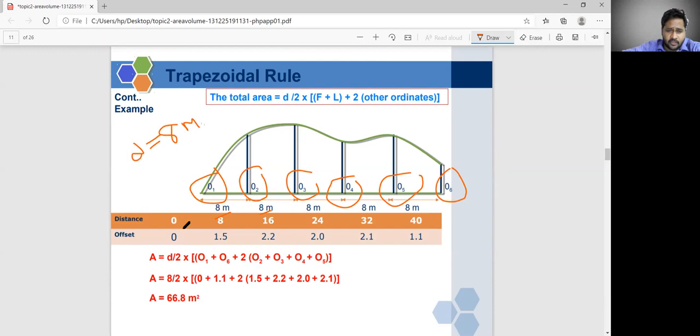O is zero, eight, sixteen, twenty-four, thirty-two, forty. And your offset, your first offset zero, and here is one. Second ordinate one point five, third ordinate two point two eight. Second ordinate one point five, third ordinate two point two, and your ordinate two point one.